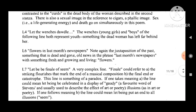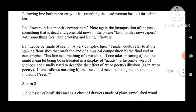Line 4: 'Let the wenches dawdle' — the wenches, young girls, and boys of the following line both represent youth, something the dead woman has left far behind her. Then line 6: 'flowers in last month's newspapers' — note again the juxtaposition of the past, something that is dead and gone (old news in the phrase 'last month's newspapers') with something fresh and growing — the flowers.